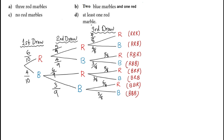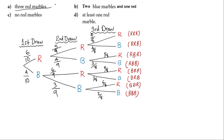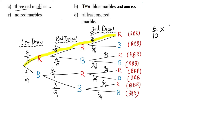From the tree diagram, let us start finding the probability of these events. First question: find the probability of three red marbles. Look at the tree diagram to find where you have three red marbles — that is the R, R, R branch. Along the branch you multiply the probabilities because it is an AND condition: 6/10 multiplied by 5/9 multiplied by 4/8. This gives the probability of getting all reds, which can be written as the fraction 120 over 720.